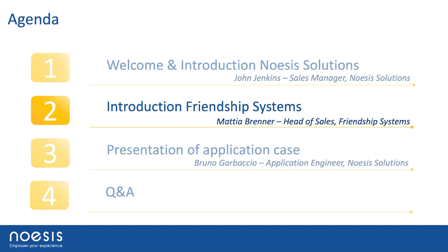We've arrived at the part of the webinar where we dig in to what you came here for. I'm turning the time over to Mattia Brenner, head of sales for Friendship Systems. He's been with Friendship Systems for over 10 years, previously in pre-sales and engineering, and he's a trained naval architect. He'll introduce Friendship Systems and talk about CASIS, the tool we'll be demonstrating today in conjunction with Optimus.